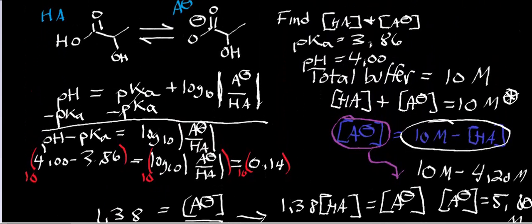The reverse is also true. If instead of a buffer pH of 4.00 we had a pH of 3.5 — which is below the pKa — then we would expect to find a concentration of acid greater than the concentration of its conjugate base.